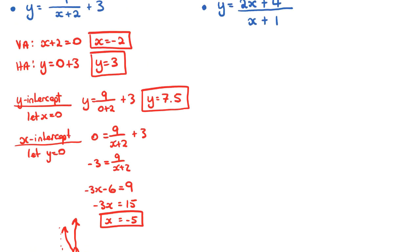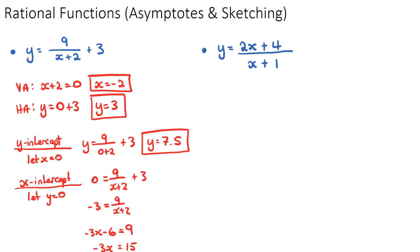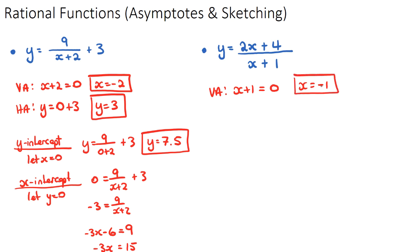For the second example, we find the vertical asymptote by setting the denominator equal to zero. Setting x plus one equal to zero gives x equals negative one. So the equation of the vertical asymptote is x equals negative one.